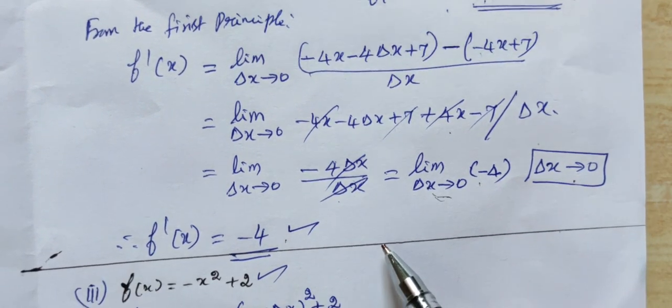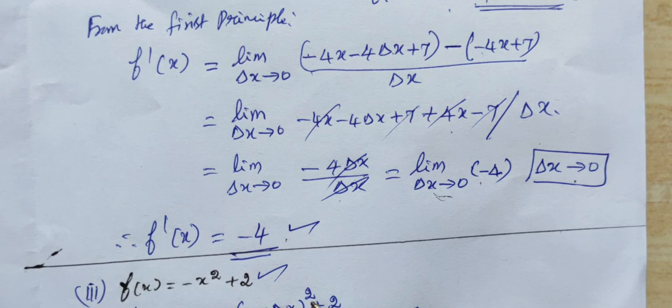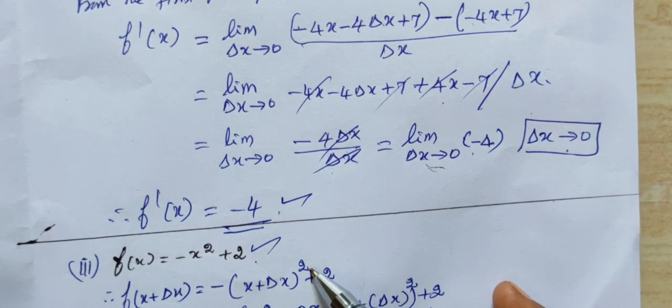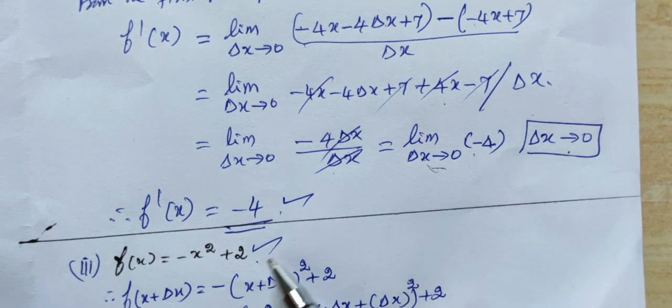Now, question number subdivision 3: f(x) = -x² + 2. F(x + delta x): x is squared, so x plus delta x is squared.